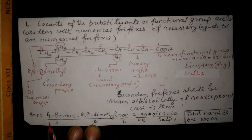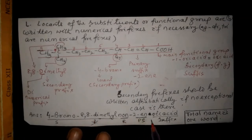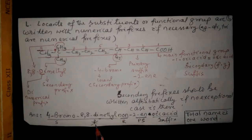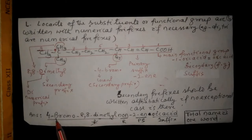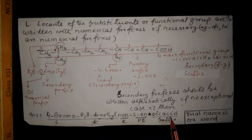The answer for the above organic compound is: 4-bromo-8,8-dimethylnon-2-enoic acid. Here the 'e' of 'ene' is cancelled before 'oic'. Oic acid is the secondary suffix, en is the primary suffix, non is the root word, and there is no primary prefix (cyclo is not present here). 4-bromo and 8,8-dimethyl are secondary prefixes; B is written before M because of alphabetical arrangement. The total name of the organic compound is treated as one word.